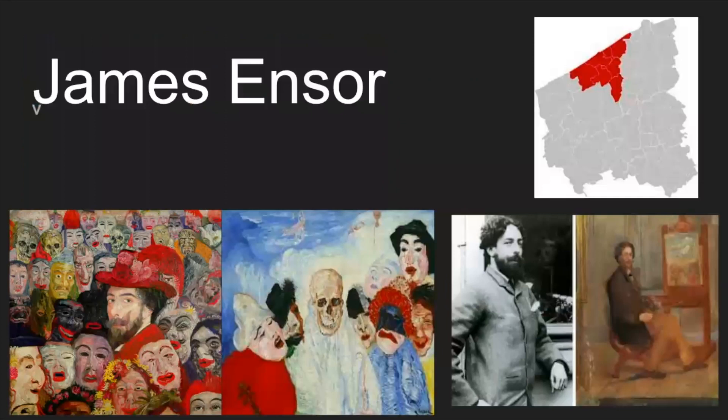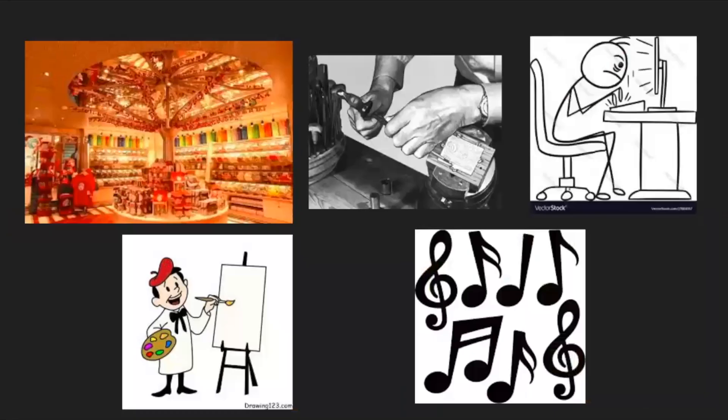The first painter I will talk about is James Ensor. He was born on April 13th of 1860 in Ostend, Belgium, and died on November 19th of 1949 in Ostend, Belgium. The style and movement of his painting were realism, impressionism, neo-impressionism, and expressionism. He was a painter, engraver, writer, and musician.